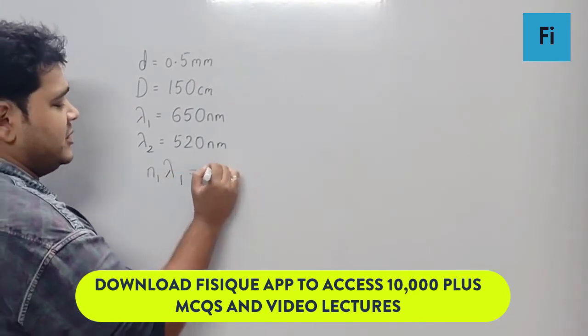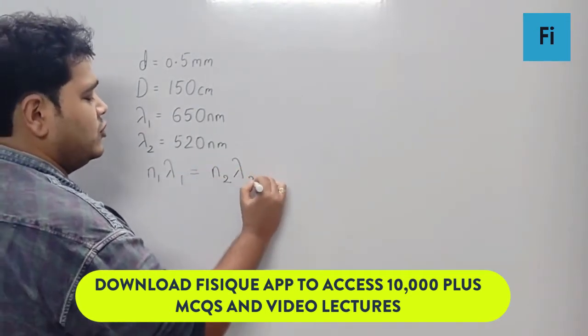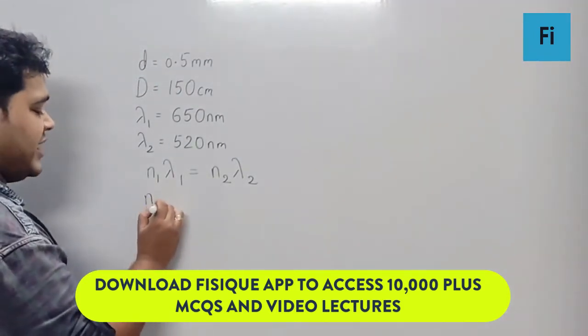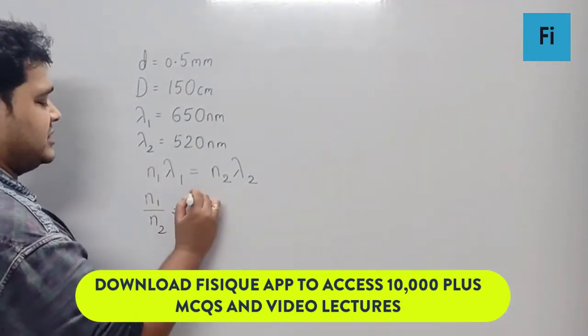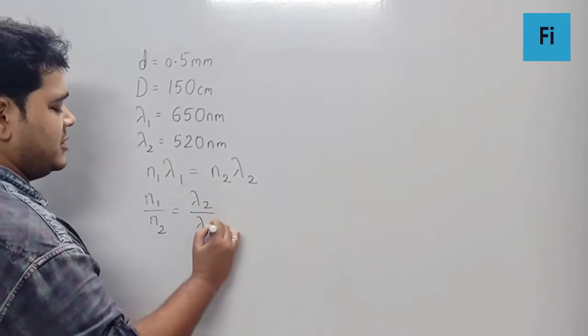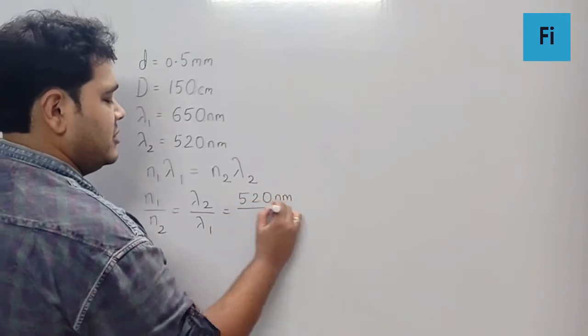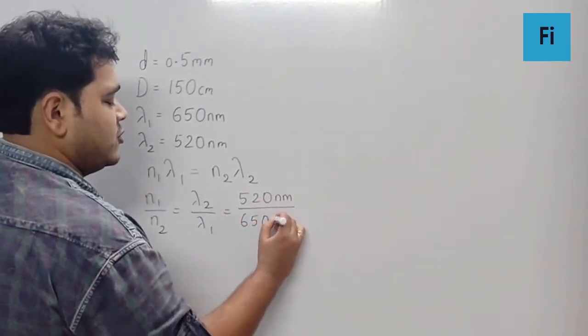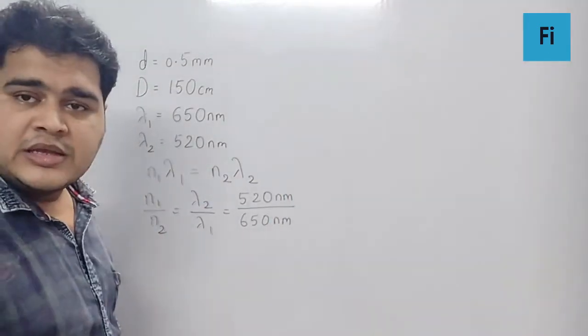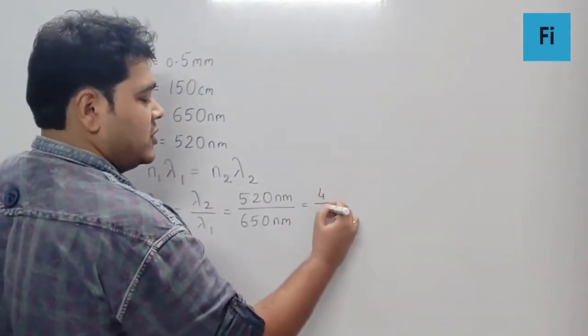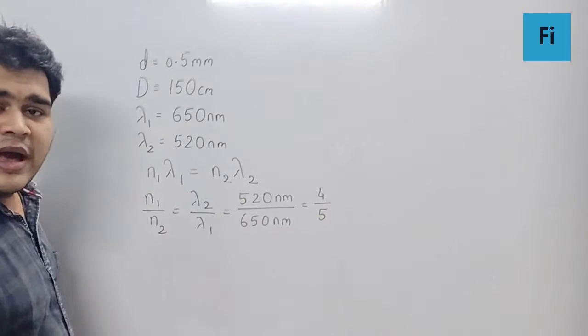n1 lambda 1 is equal to n2 lambda 2. Now, in this scenario, we can say n1 by n2 is equal to lambda 2 by lambda 1, which is 520 nm upon 650 nm. So definitely, we can cancel this out and reduce this to 4 upon 5.